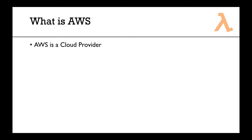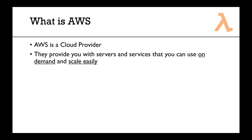So what is AWS? AWS is what's called a cloud provider. They provide you with servers and services on demand, whenever you want, and you can scale easily. If you want a new server, it takes you two minutes. If you want 1000 servers, it also takes you two minutes. You can get bigger or smaller servers, and you can shut them down or turn them on whenever you want. That's why it's called a cloud provider.